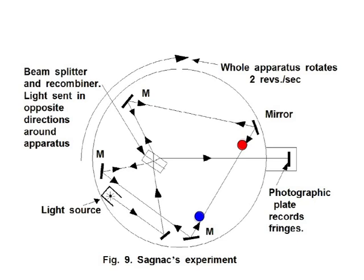They travel around the circuit in opposite directions until they eventually reach the splitter which also recombines them. There they then go on to the photographic plate where they produce interference fringes.